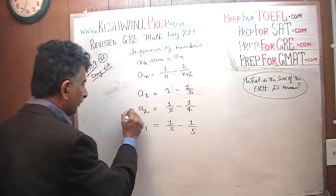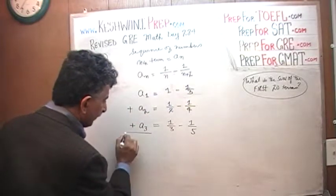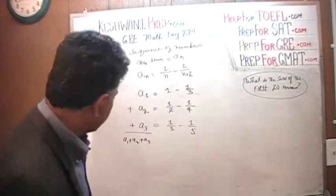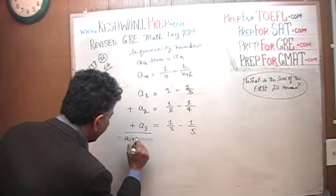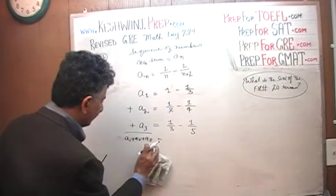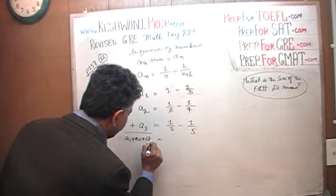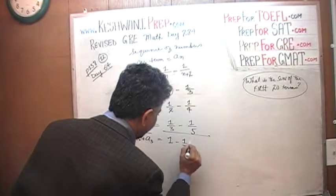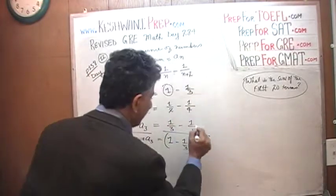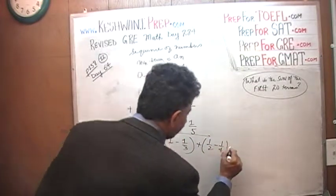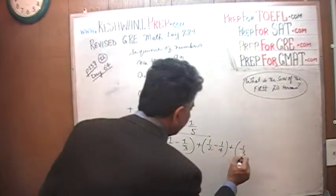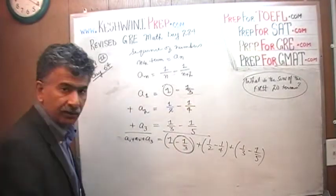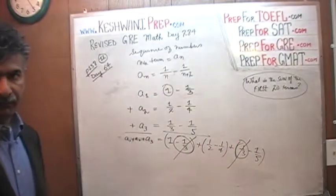If you were to add up the first three terms — a1, a2, and a3 — what do you get? You get 1 − 1/3 plus 1/2 − 1/4 plus 1/3 − 1/5. What we notice is that we have a negative one-third and a positive one-third — they cancel out. As you can see, something is going on here.